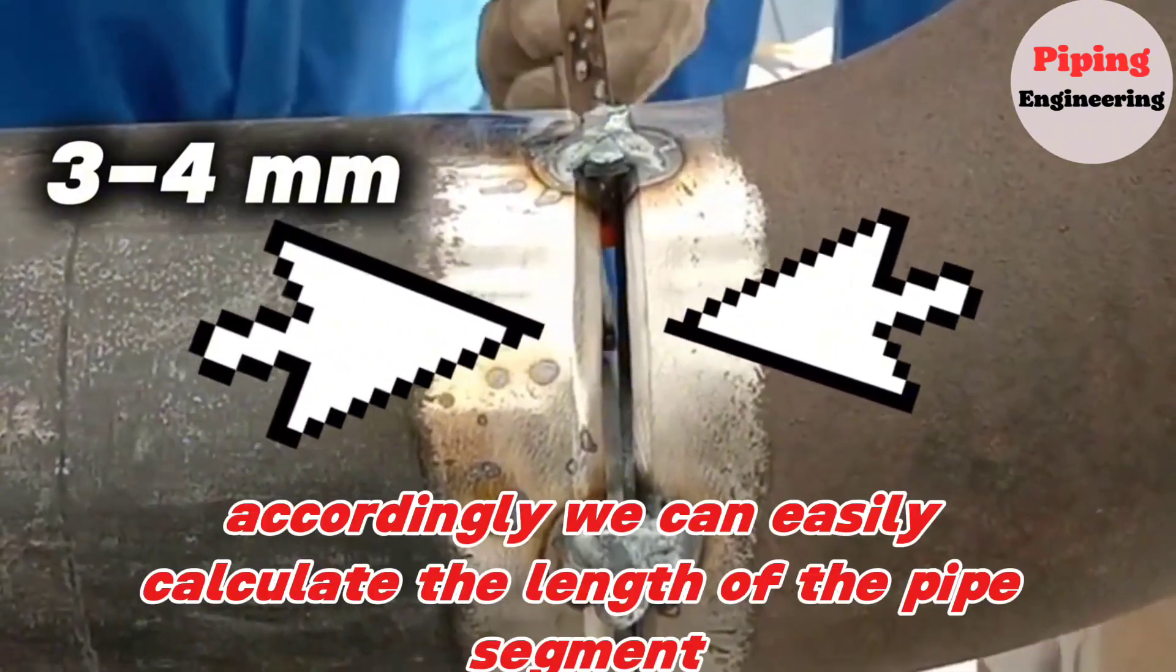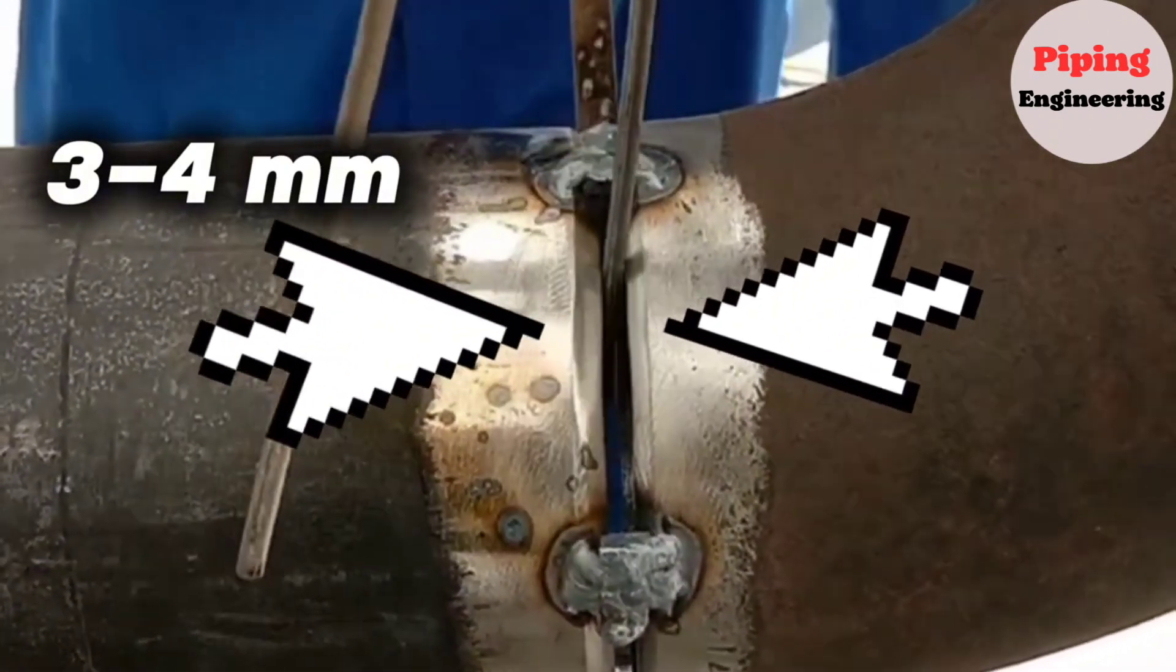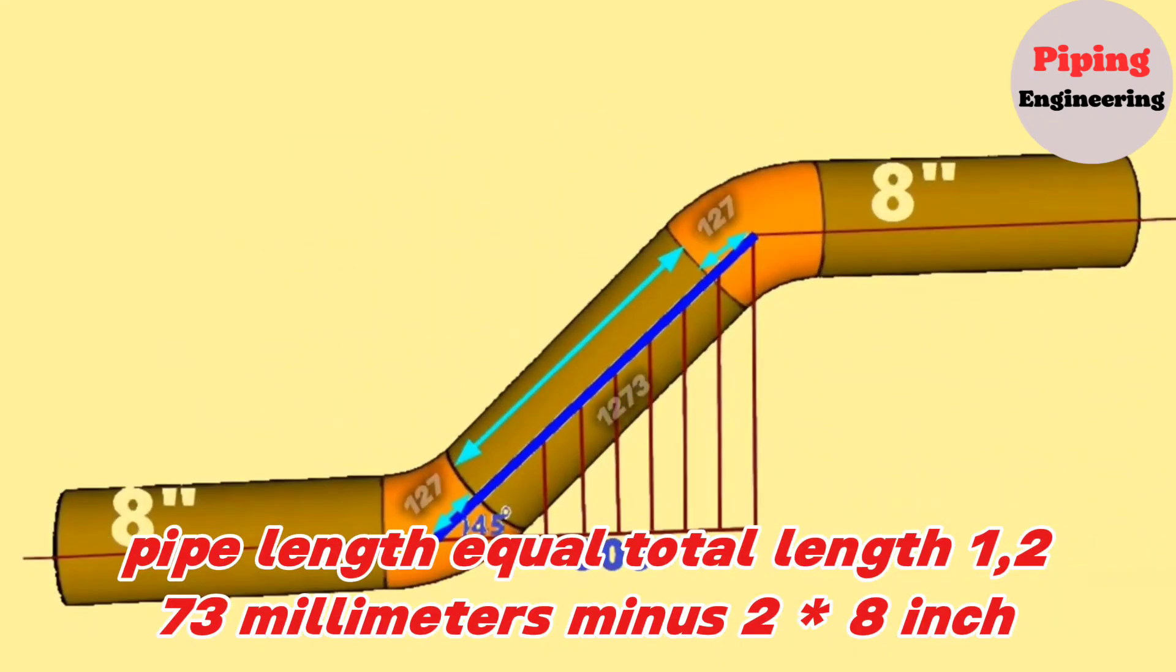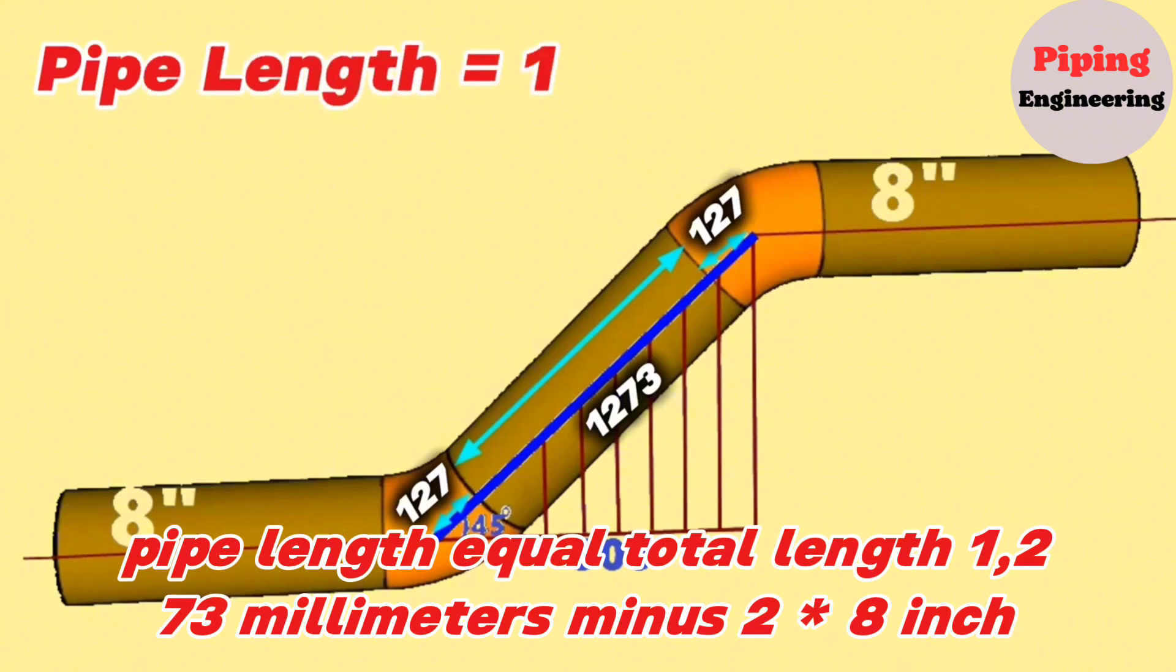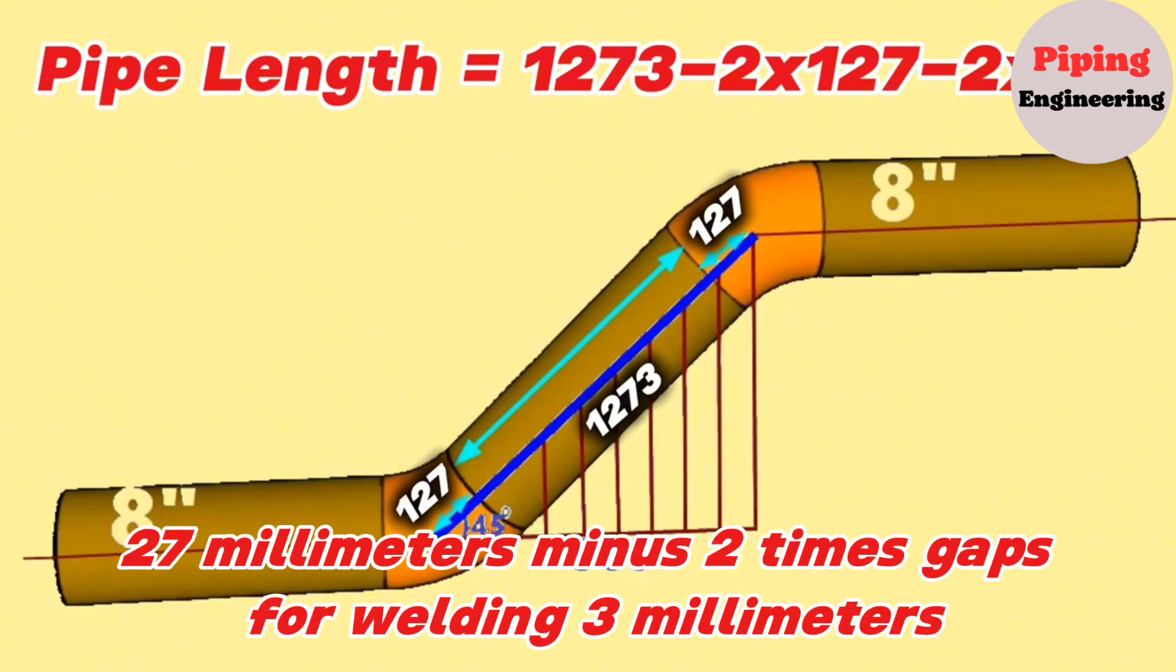Accordingly, we can easily calculate the length of the pipe segment between the elbows. Pipe length equals total length 1,273 millimeters, minus 2 times 8-inch 45-degree butt weld elbow dimension 127 millimeters, minus 2 times gaps for welding 3 millimeters.